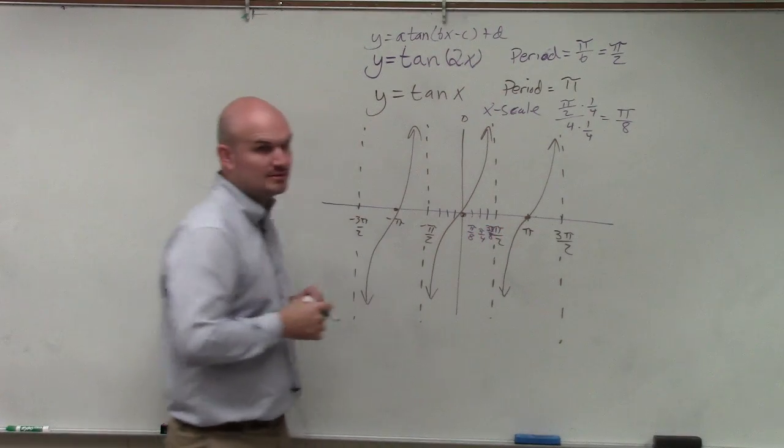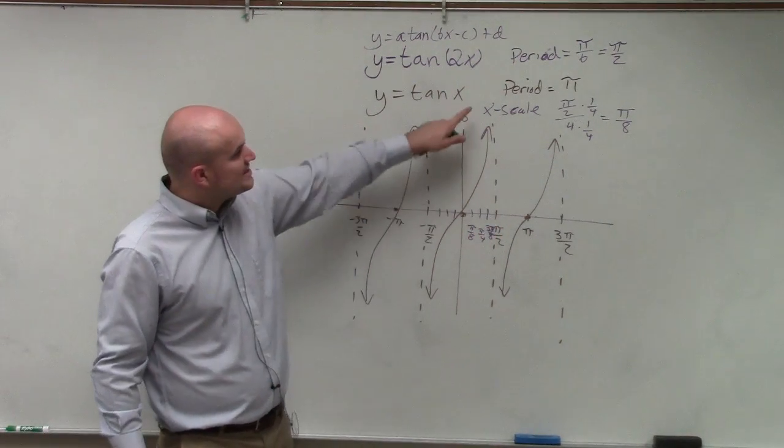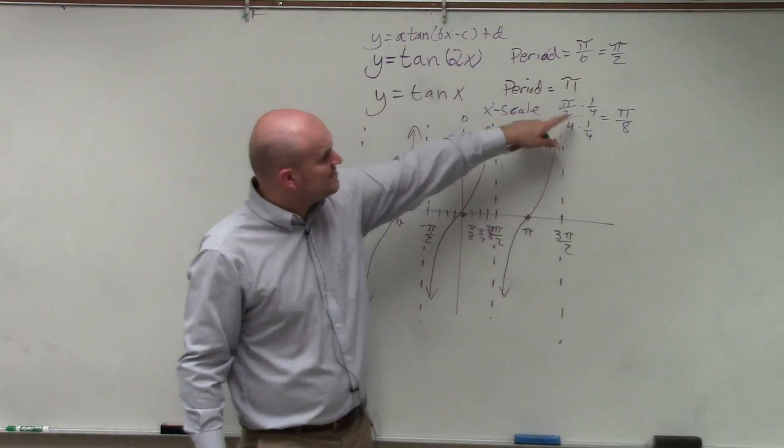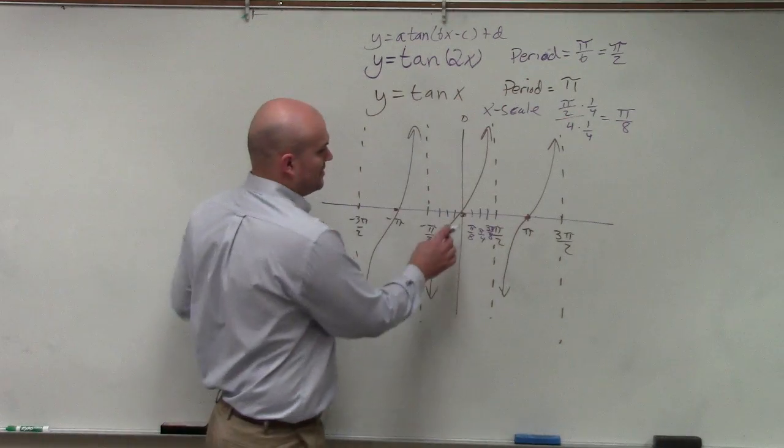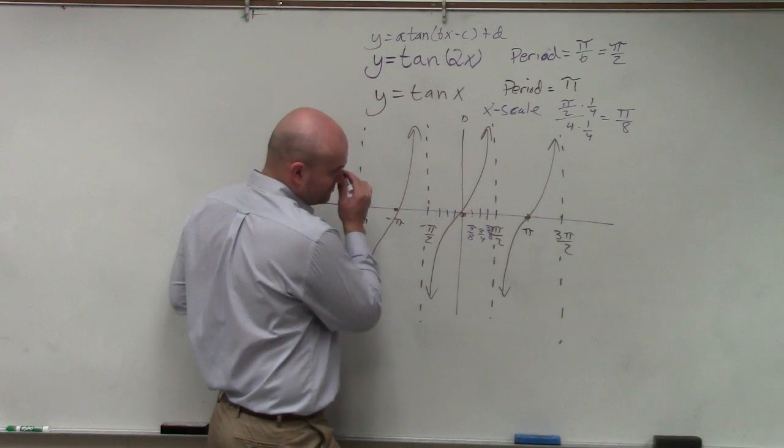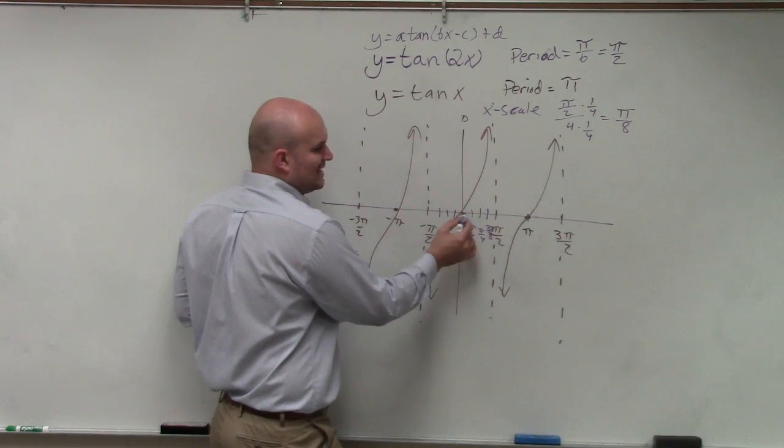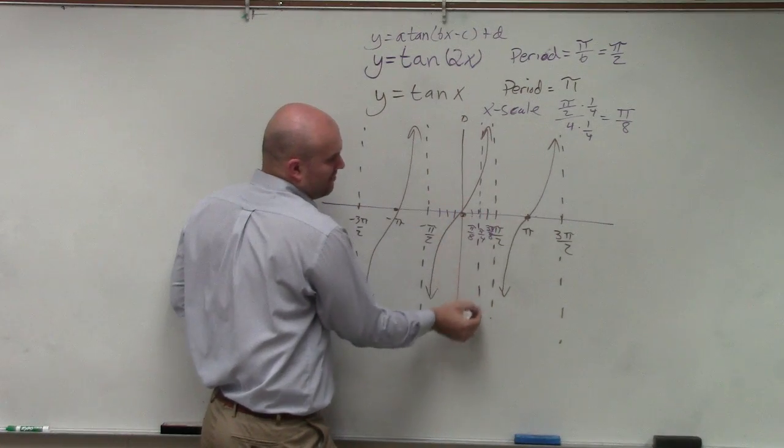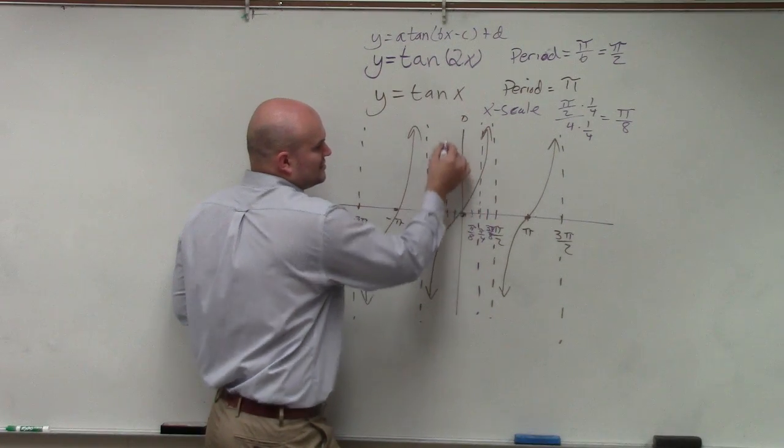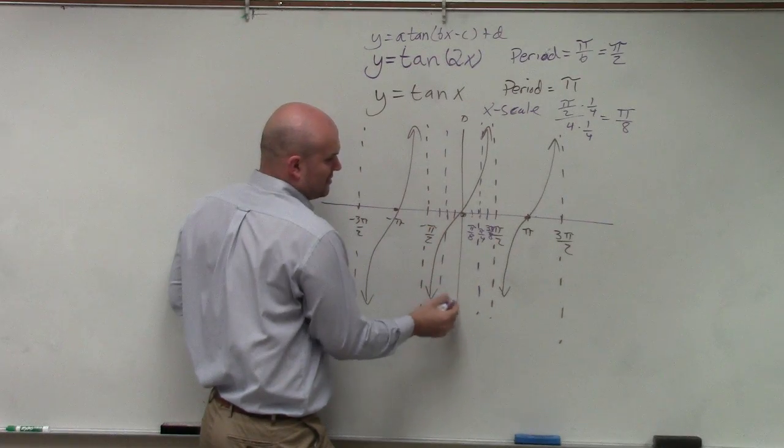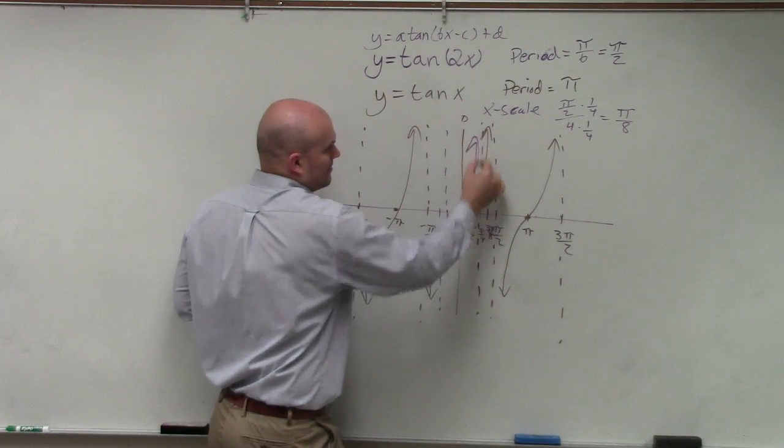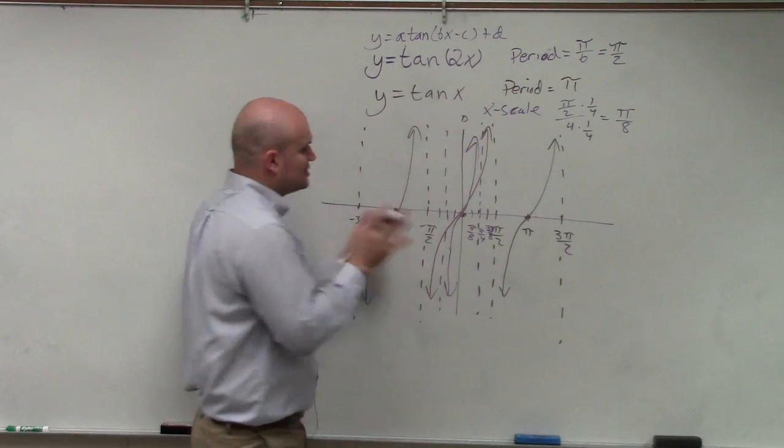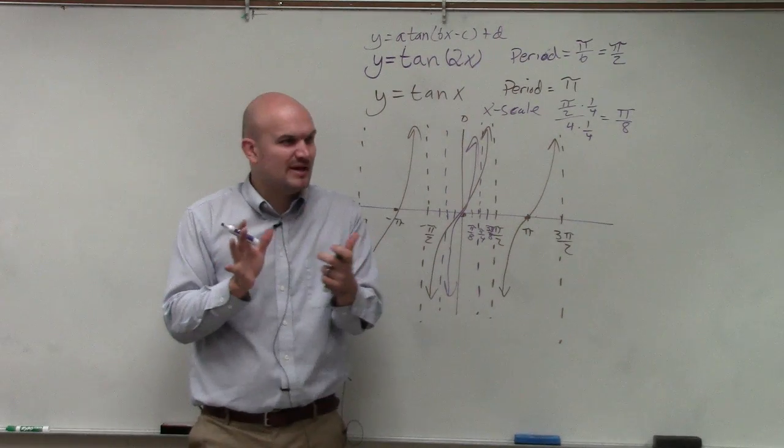So the scale is pi eighths, but the period is now pi halves. So instead of the whole pi eighths, now my asymptote is going to go from positive pi fourths to negative pi fourths. So now the graph, the period just got shrunk. Does everybody see how that happened?